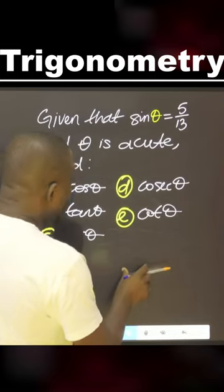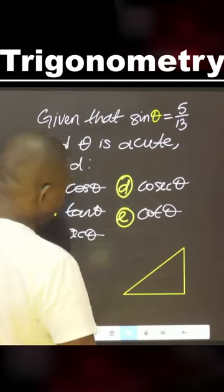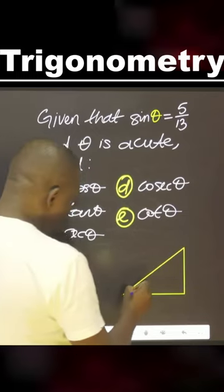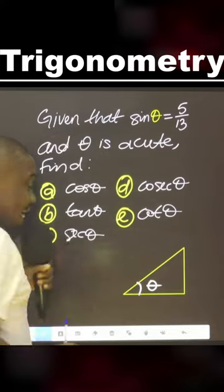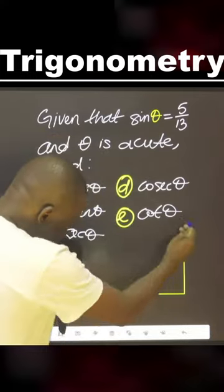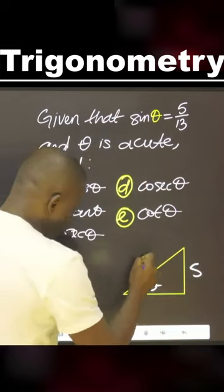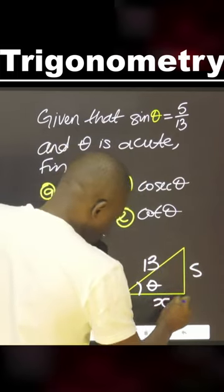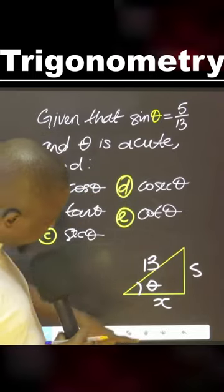Now, what we need to do, let's draw a right angle triangle. We are going to call it theta. Sin theta means opposite, that is this line that is opposite this angle, which is 5 over hypotenuse, which is 13. It means we don't know this. Because we have different types of ratios here, we need to find X.